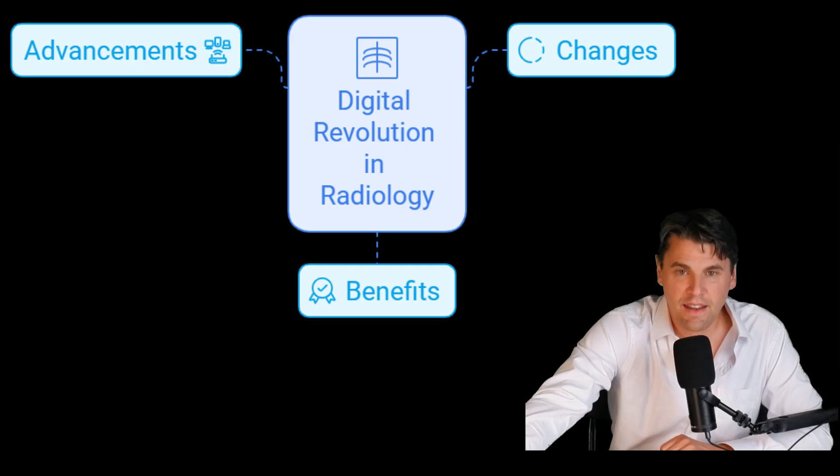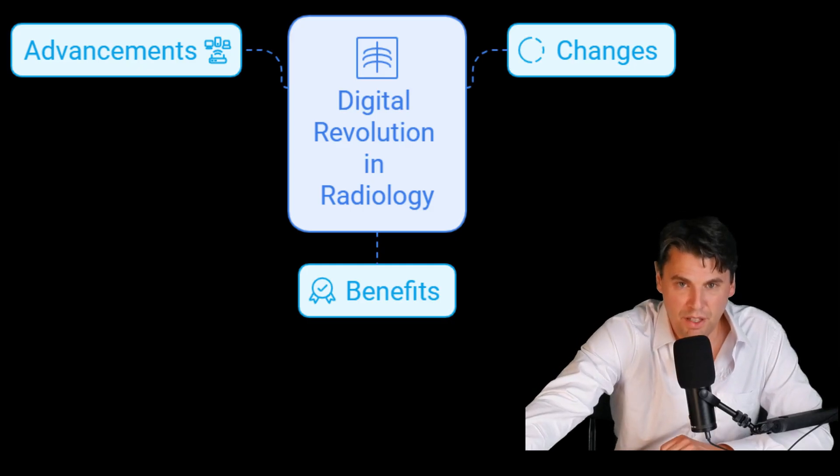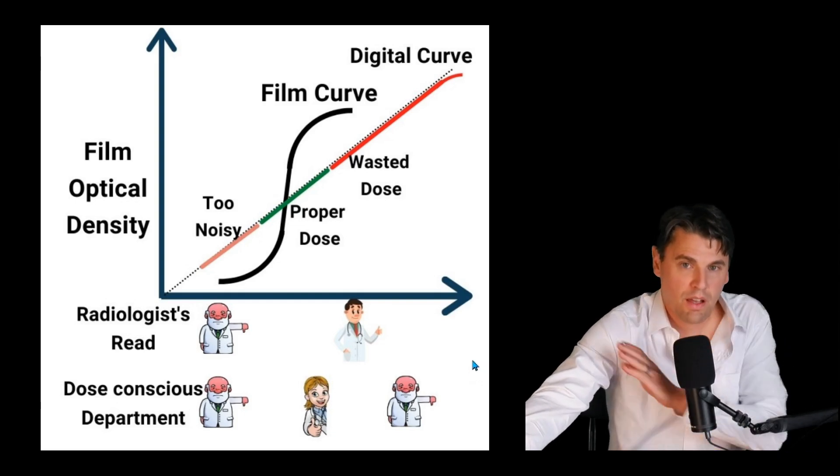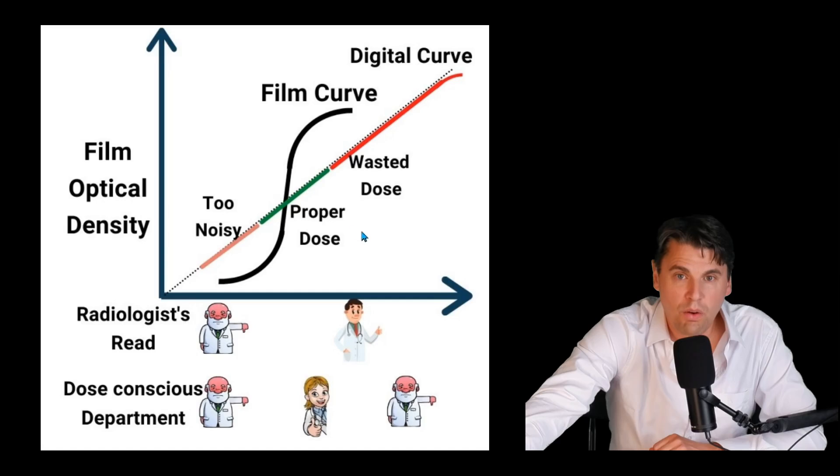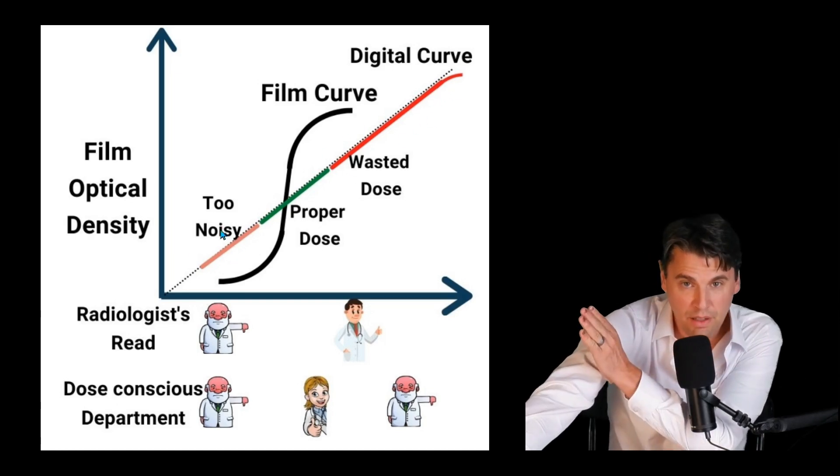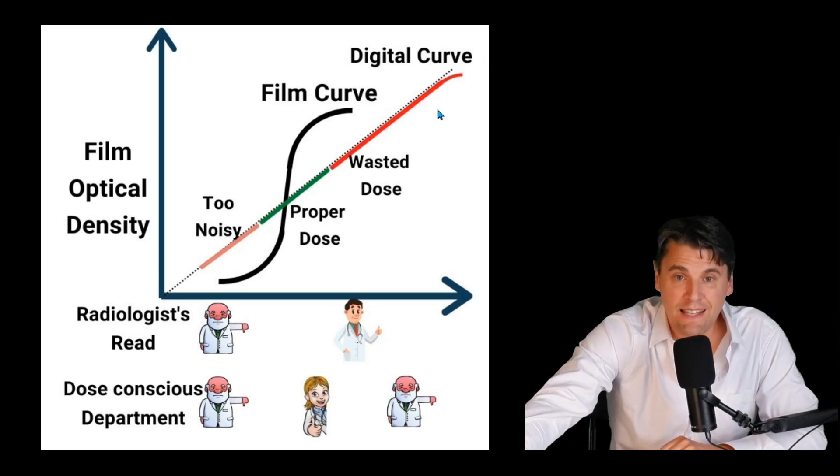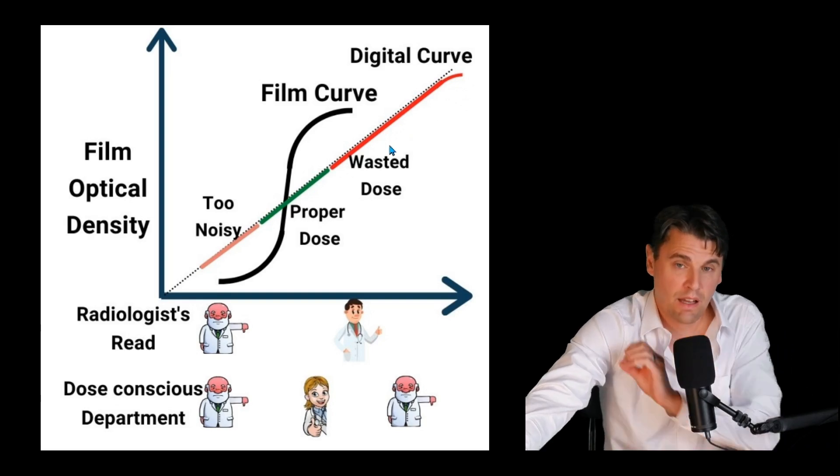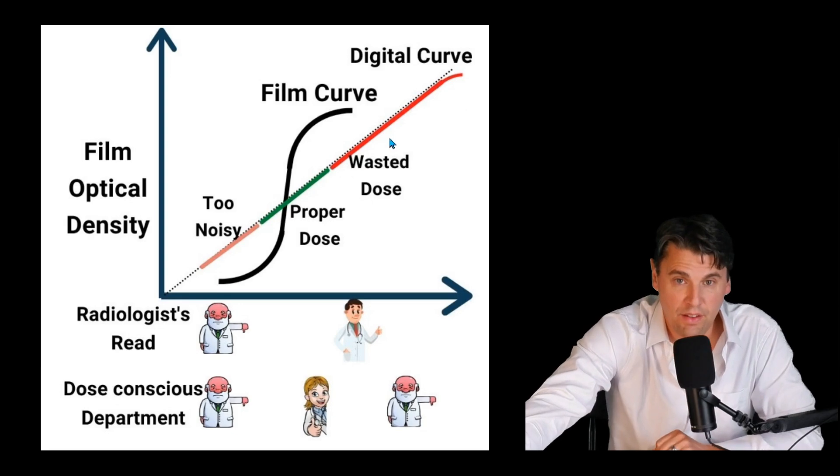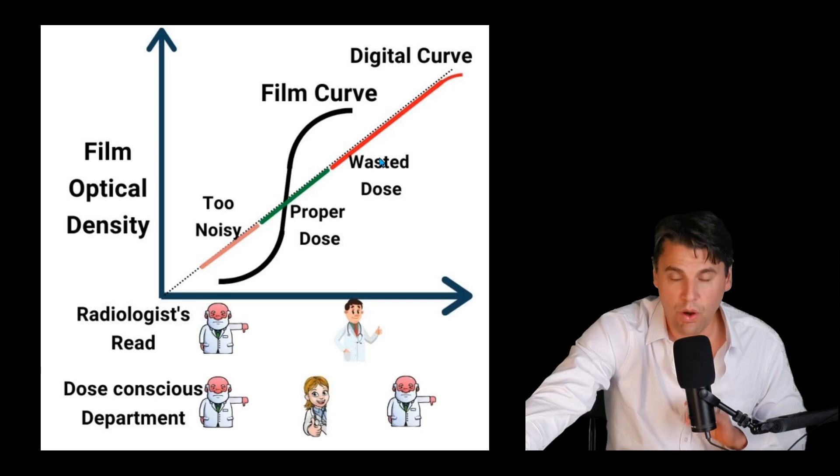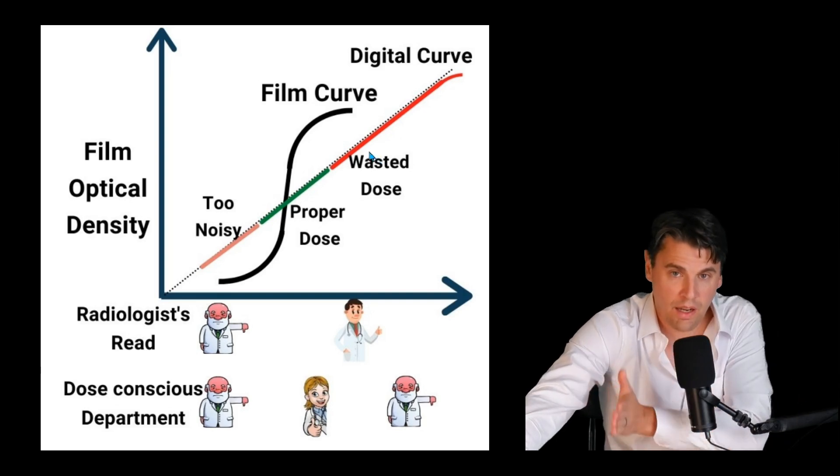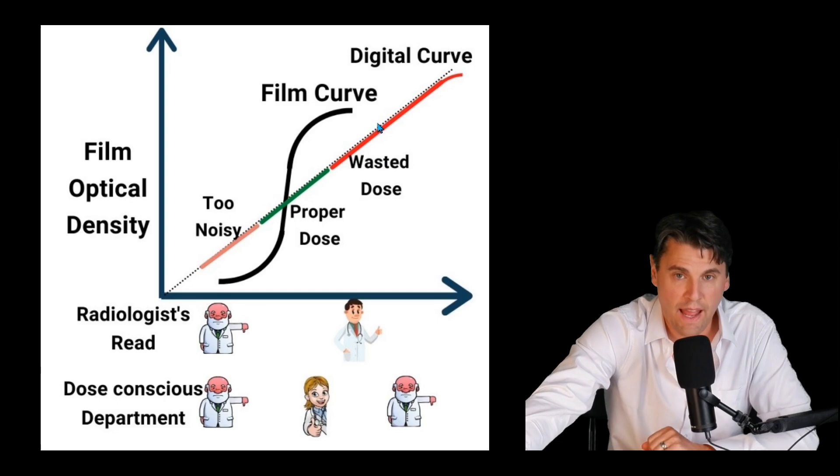But this led to an inherent way of monitoring the exposure that was happening at your image receptor, which was film. Now comes the digital revolution. In the digital revolution, like we've talked about in CR and DR videos, we have a different type of curve. Instead of having this S-shape curve, we now have a nice flat line.